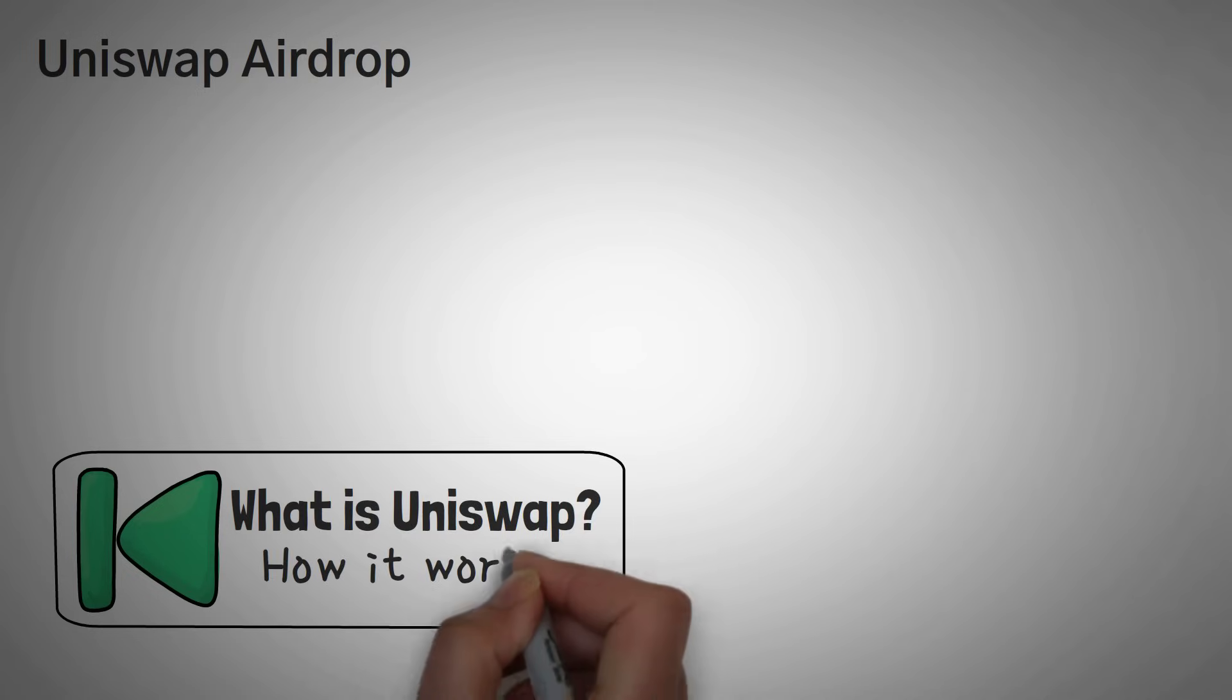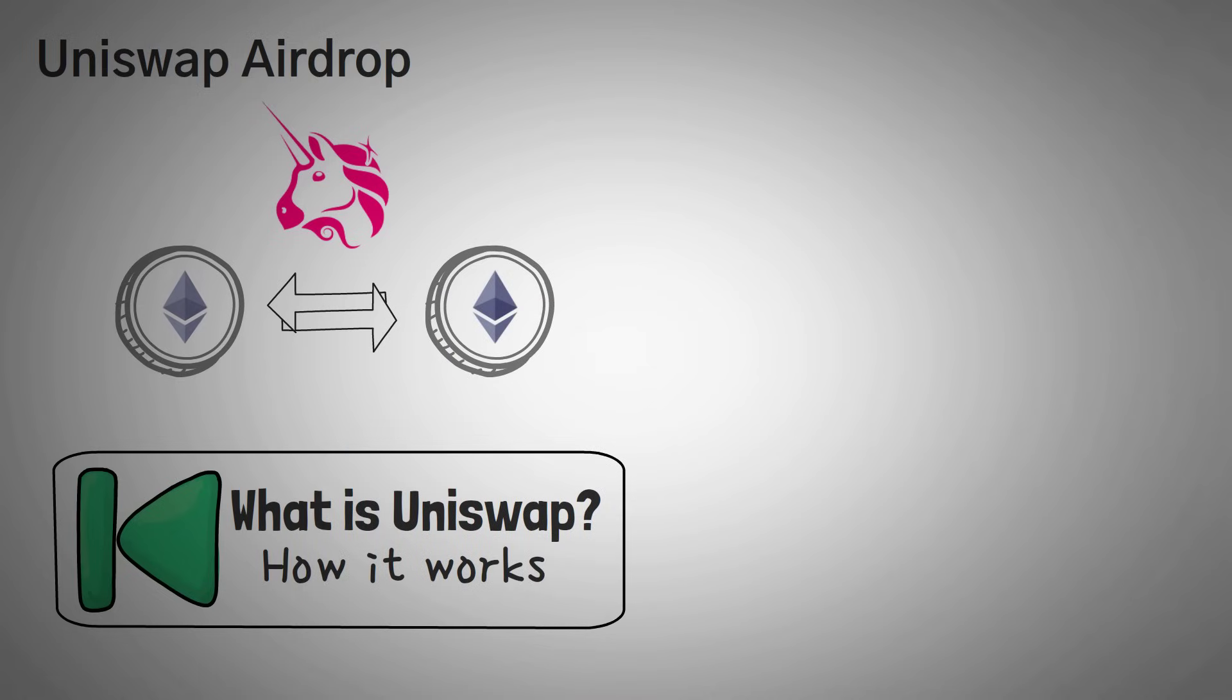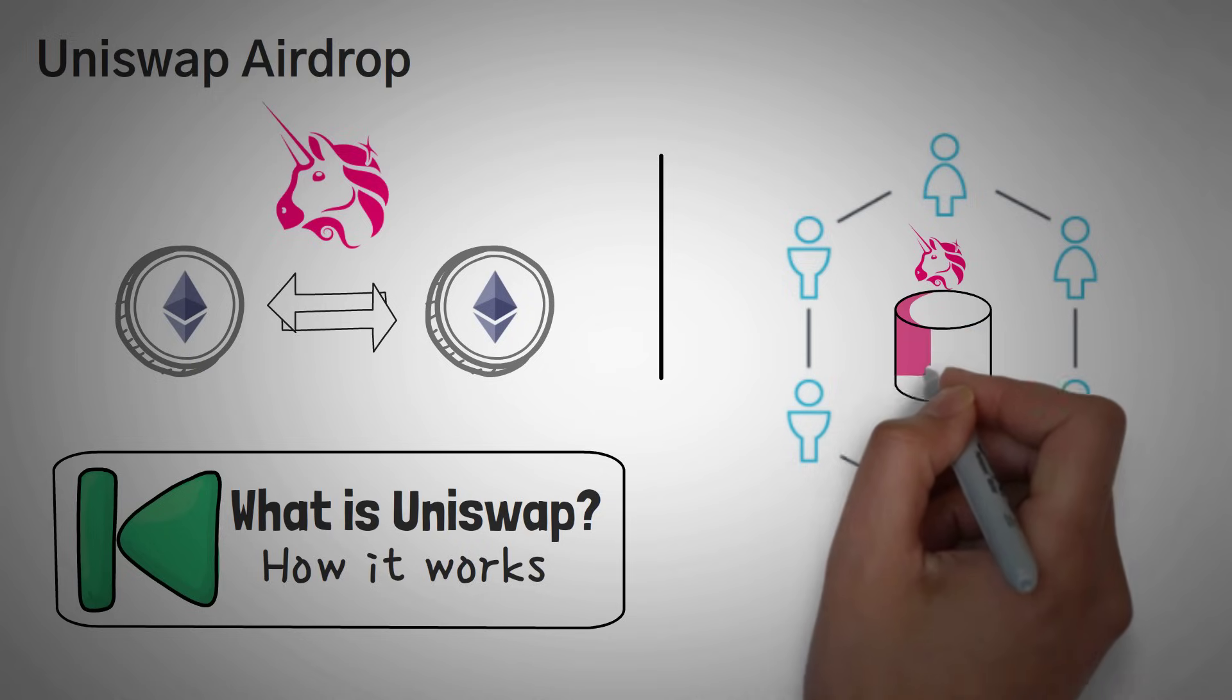If you don't know what Uniswap is, we actually have an entire video explaining it. But in short, they are a platform that allows you to exchange any Ethereum token for any other Ethereum token. Right now, they are the largest decentralized exchange by total value locked in their liquidity pool.